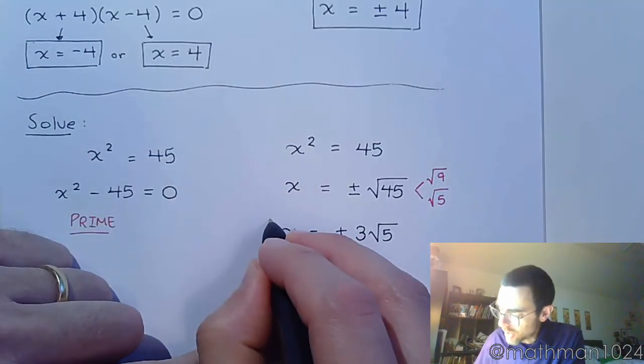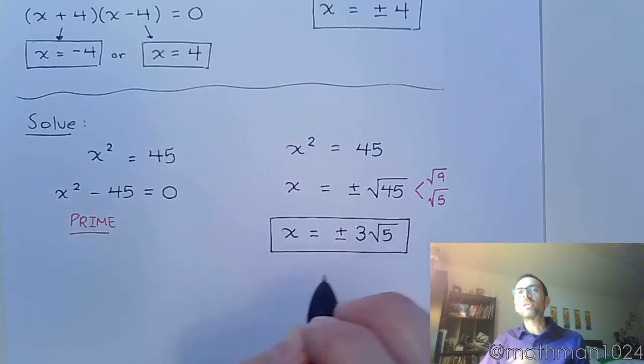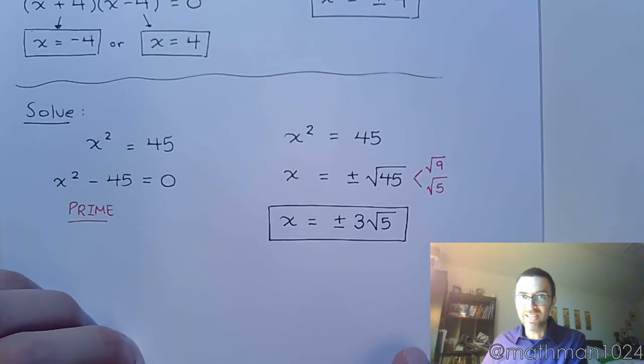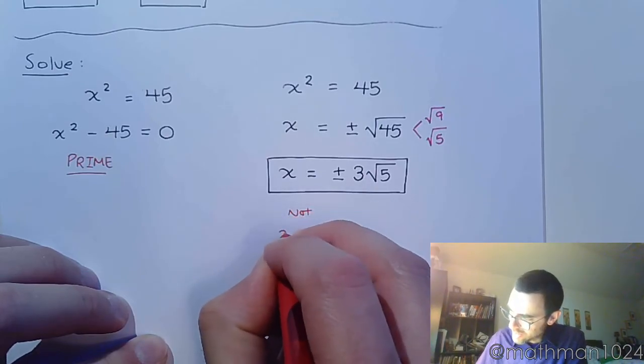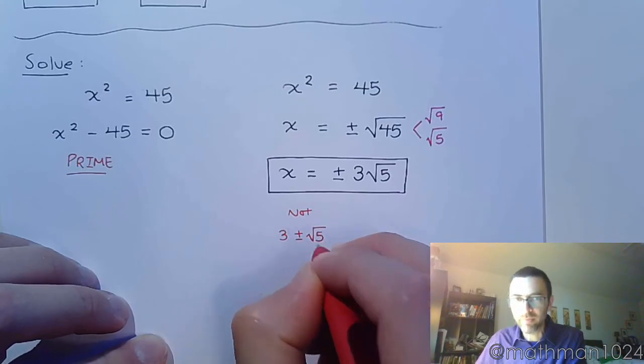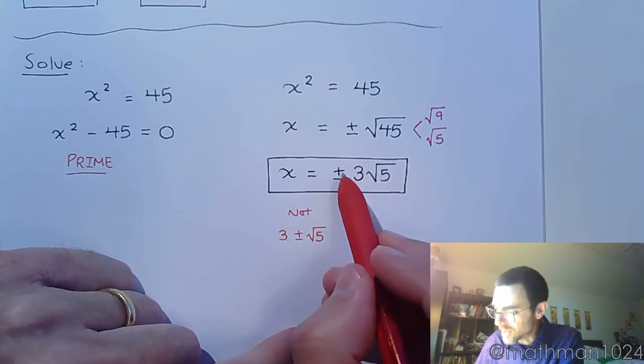So here are our two solutions: plus or minus 3 square roots of 5. The placement of the plus or minus is very, very important. Please understand that it's this and not 3 plus or minus the square root of 5. There is a difference here. So this means the plus or minus is on this entire expression.